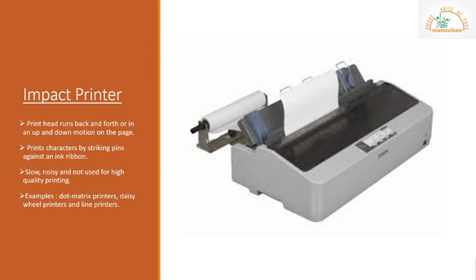In impact printers, a print head runs back and forth or in an up and down motion on the page. They print characters by striking pins against an ink ribbon — a mechanical contact is required between the print head and the paper. They are pretty slow, noisy, and are not used for high quality printing. Examples are dot matrix printers, daisy wheel printers, and line printers. These kinds of printers are hardly used nowadays because we have faster, cheaper printers with much better print quality available in the market.